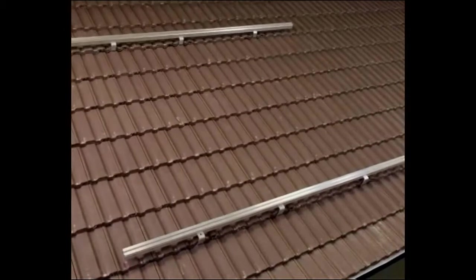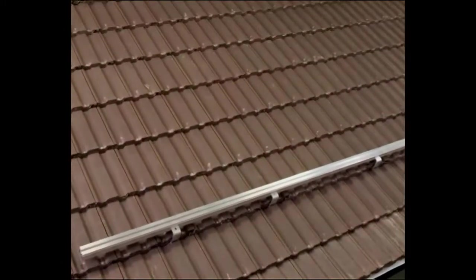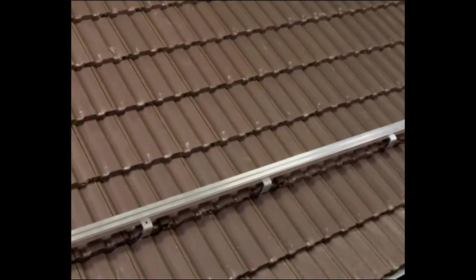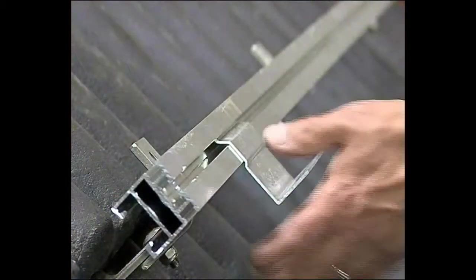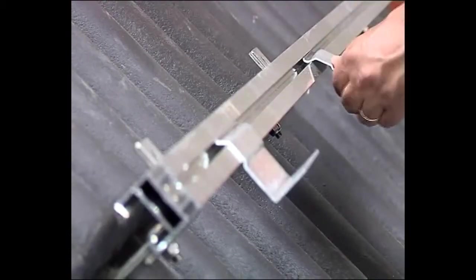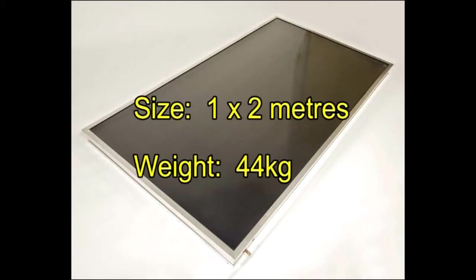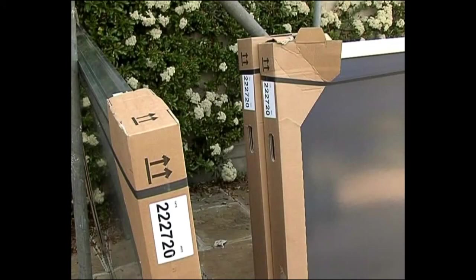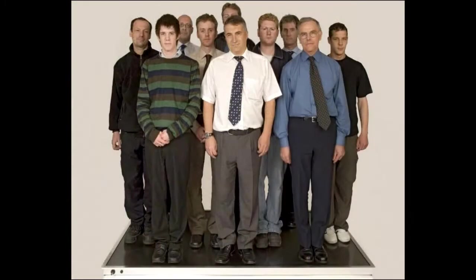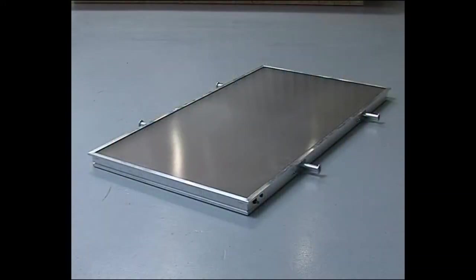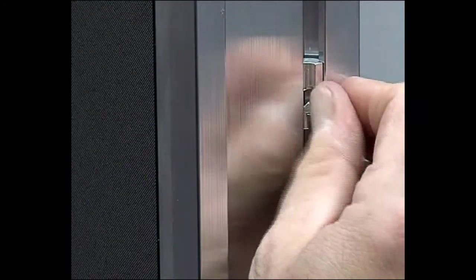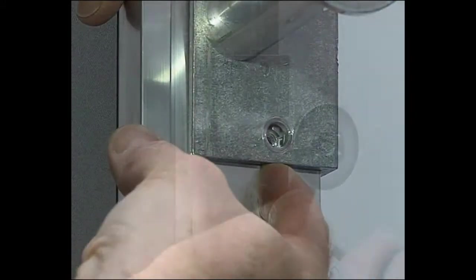With the upper and lower mounting rails fixed, it's time to fix the collectors. On the lower rail, support plates are now inserted to support the collector before fixing. Each collector measures about 1 by 2 meters and weighs 44 kilograms. They're supplied in protective packaging, although the glass can support the weight of 10 men. Aluminum lifting handles can be provided, and these are quickly attached to the panel with the fixing supplied.